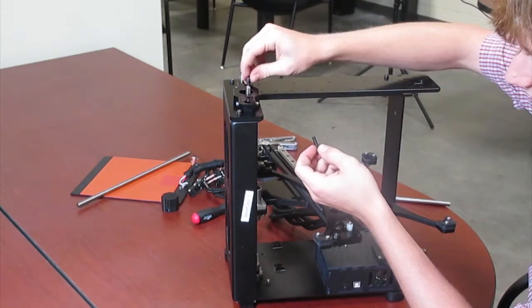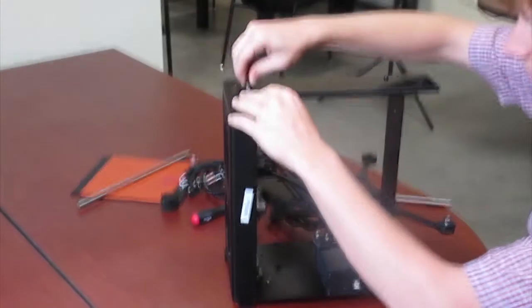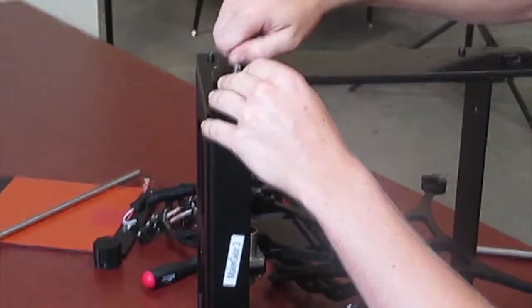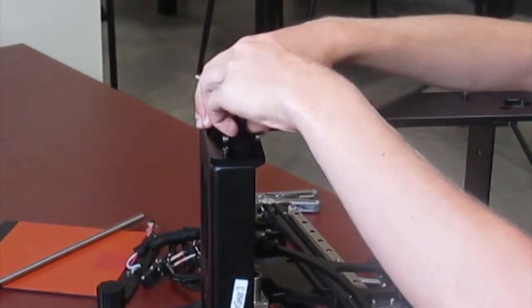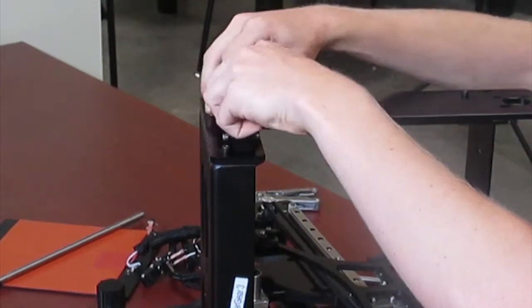Set that on top and stick through your M5 by 22 black bolts. Do not tighten these yet. Simply stick them through the holes, as you'll have to come through later and tighten them.